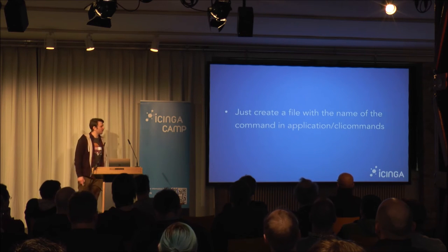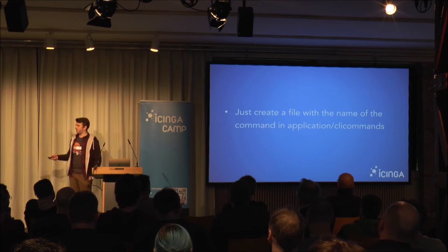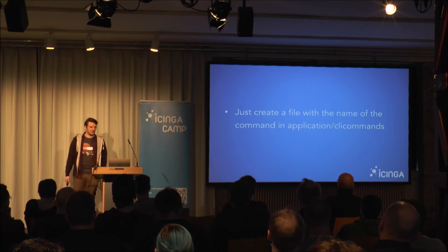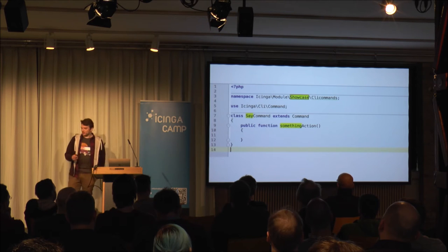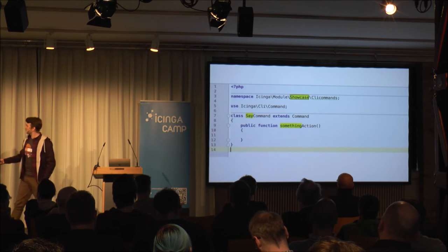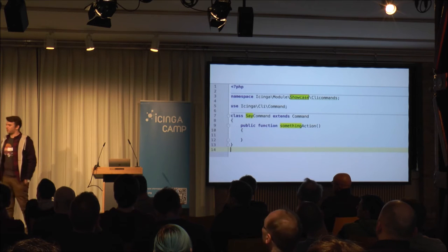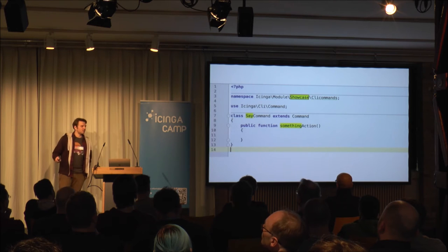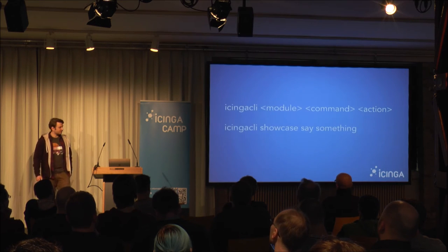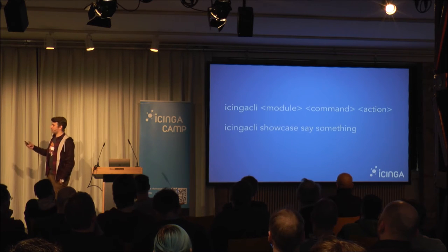Now let's start creating our first CLI command. We just have to create a file beneath application/clicommands in our showcase module directory. We are starting with a 'say' command — this is a good example of convention over configuration. In our code the module name is 'showcase', the command is 'say', and the action is called 'something'. This gives us the scheme: icinga-cli showcase say something.